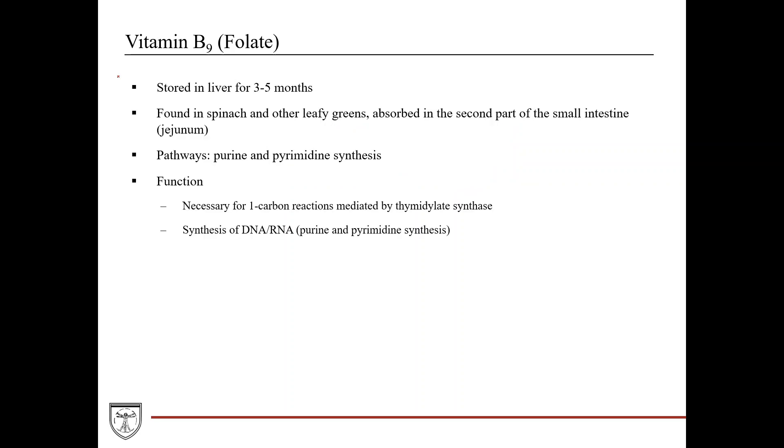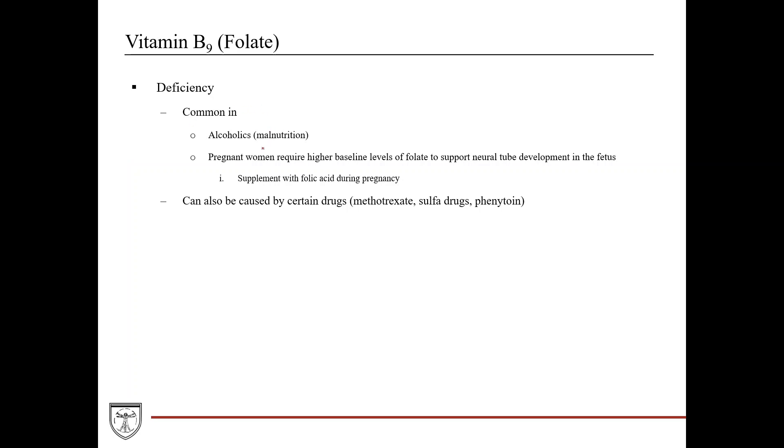Vitamin B9, also known as folate, is stored in the liver for 3-5 months. In the diet, it's found in spinach and other leafy green vegetables. It's absorbed in the second part of the small intestines called the jejunum. Pathways it's involved in are purine and pyrimidine synthesis. The function is that it's necessary for one-carbon reactions mediated by thymidylate synthase, which is an enzyme involved in these processes. Overall, it serves as a requirement as a cofactor for reactions involved in the synthesis of DNA and RNA.